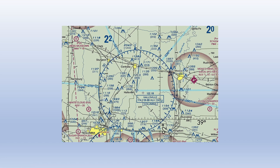Each VOR symbol on a sectional chart is surrounded by a compass rose. There is a long arrow pointing to magnetic north. Small tick marks are in five-degree increments and larger tick marks indicate 10-degree increments. Numbers are marked every 30 degrees and the last zero is dropped to save space — so '3' here indicates the 030 degree radial, and '30' indicates the 300 degree radial. Blue lines coming off the VOR indicate Victor Airways, which we'll get into a little later in the lesson.